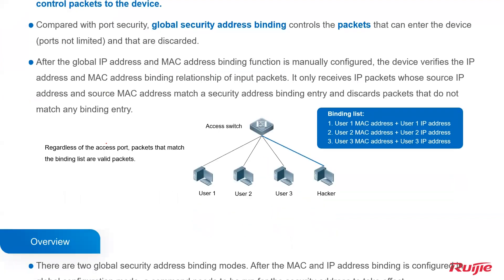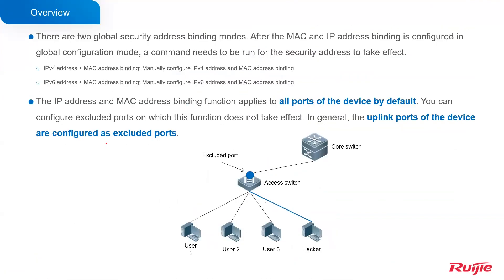There are two global security address binding modes. After the MAC and IP address binding is configured in global configuration mode, the command needs to be run for the security address to take effect. It can be used in both IPv4 and IPv6 networks. The IP address and MAC address binding function applies to all ports of the device. Once configured on the device, it will be enabled on all ports.